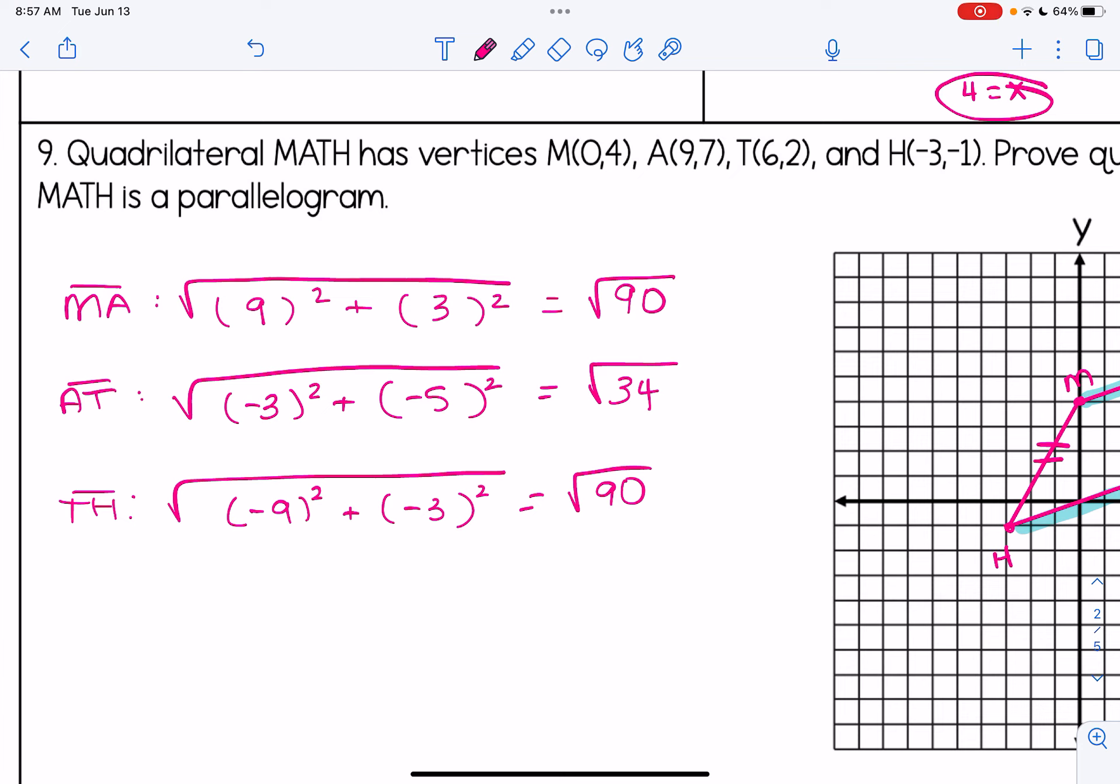Let's do our last side here. So our last side is going to be HM, which we said should be congruent to AT. So for HM, when I subtract the x's, I am going to get 3. When I subtract the y's, I get 5. And I get radical 34. So notice how our opposite sides are congruent, and we basically proved that. We verified it through a calculation.